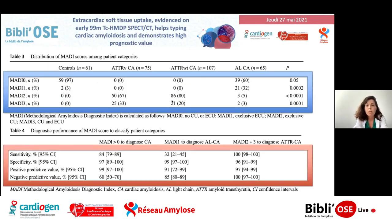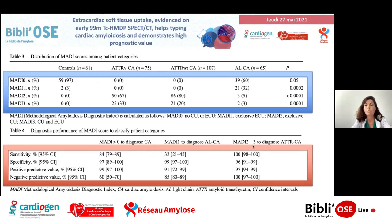Les scores MADI 1 sont exclusivement présents dans l'amylose AL. Quand on a une fixation extracardiaque — score MADI 1 — on a une spécificité à 99% pour l'amylose AL et une valeur prédictive positive de 91%. Alors que quand on a un score à 2 ou 3 — score MADI 2 : fixation cardiaque unique, ou score MADI 3 : fixation cardiaque et extracardiaque — on a une spécificité importante pour le diagnostic d'amylose à transthyrétine.